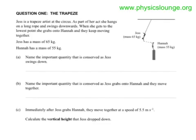This is the 2012 Mechanics paper for Level 2 Physics. Question 1, the trapeze. Jess is a trapeze artist in the circus. As part of her act, she hangs on a long rope and swings downwards. When she gets to the lowest point, she grabs onto Hannah and they keep moving together. Jess has a mass of 65 kg, Hannah has a mass of 55 kg.